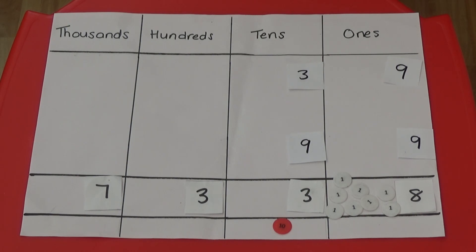I'm going to put the 3 10s in the 10s column and exchange 10 of the 10s counters for a 100 counter and put it under the answer box in the 100s column.